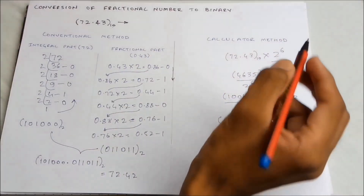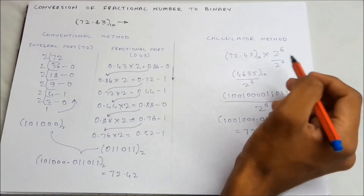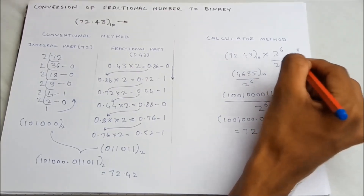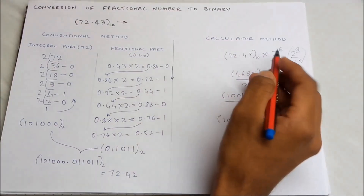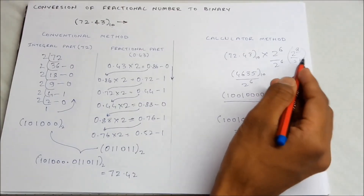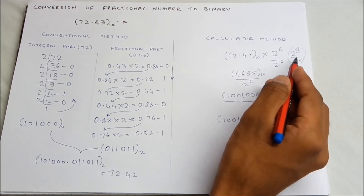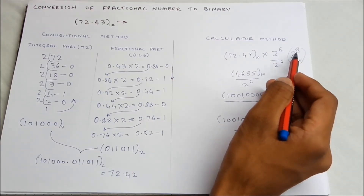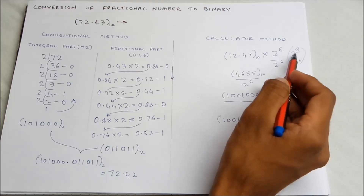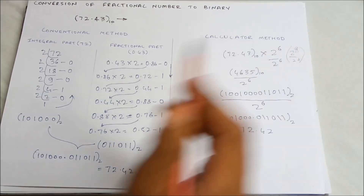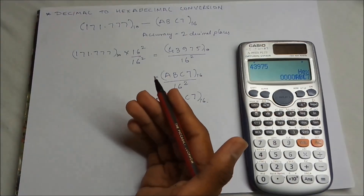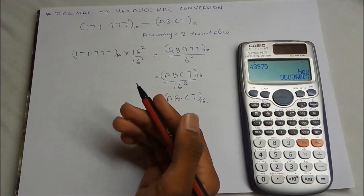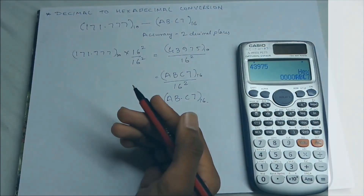To get better accuracy, you can multiply and divide by a higher power number. For example, you can use 2 to the power of 7 or 2 to the power of 8. If you multiply and divide by 2^8, you get a more accurate value with precision up to 8 decimal places. For 9 decimal places, use 2 to the power of 9. This method is quite easy and useful especially for engineering students during examinations. Thank you for watching, I hope you liked this tutorial.